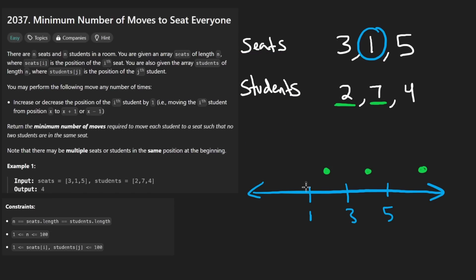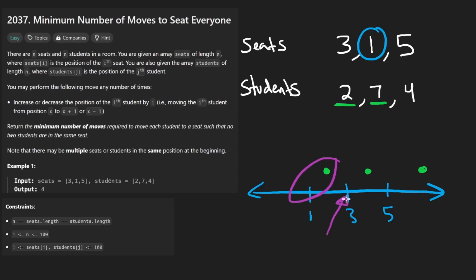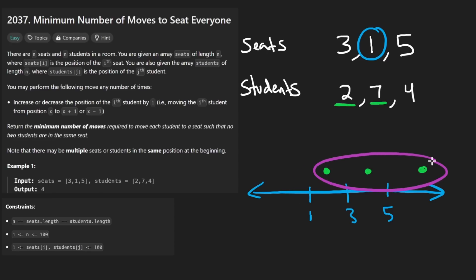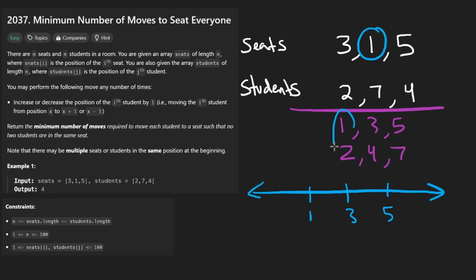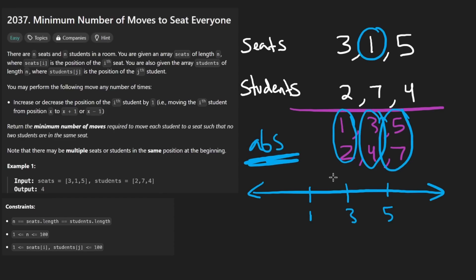The idea is that if we sort the seats and sort the students, we get the natural one-to-one mapping, and we just iterate through both at the same time. So sorting gives us 1, 3, 5 for seats and 2, 4, 7 for students. Then we look at every pair and calculate the diff — diff of one, diff of one, diff of two. We take the absolute value since distance is always positive. That gives us a total of four.